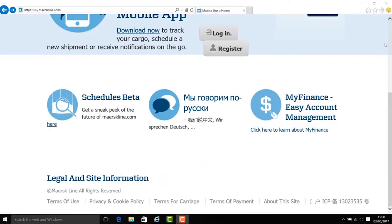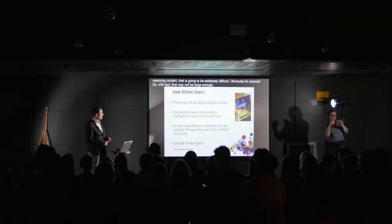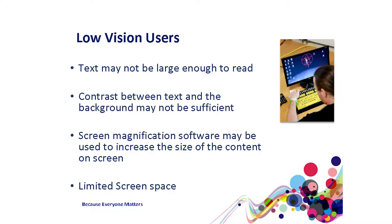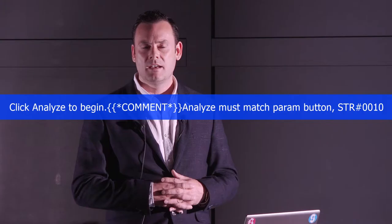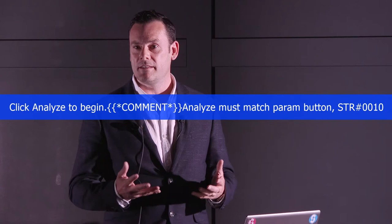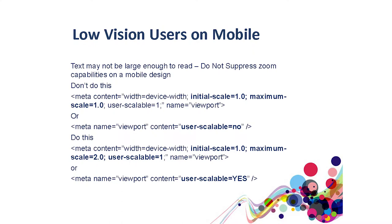On mobile, if you develop mobile applications or responsive design, make sure you don't suppress zoom. If you do suppress zoom using 'user-scalable=1' and a fixed scale, users can't pinch-and-zoom content on screen. This is an absolute no-no for low vision users. You must ensure content can adjust to double its size — 200% of the initial scale.